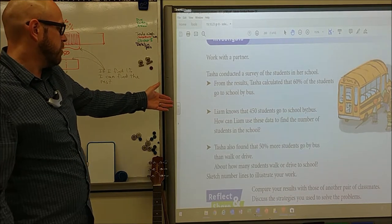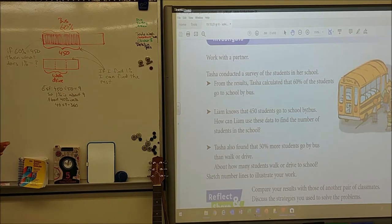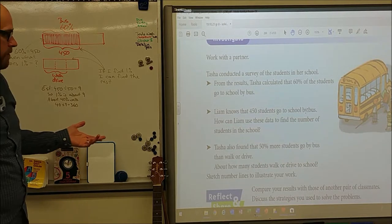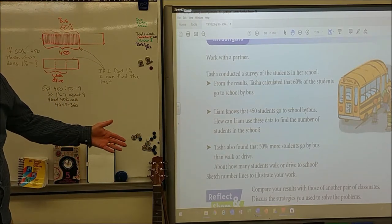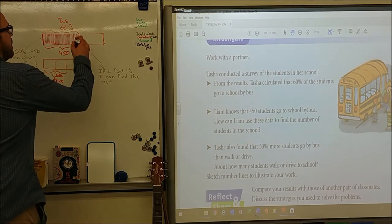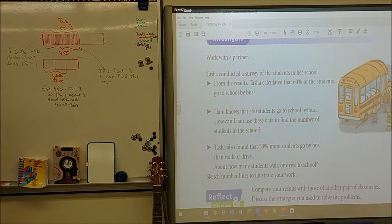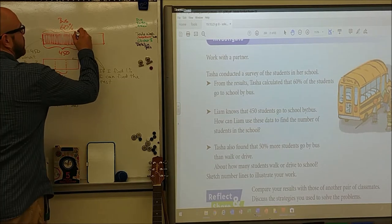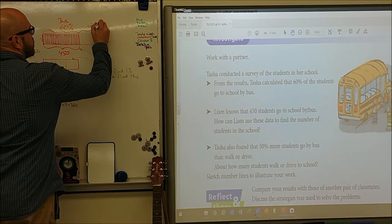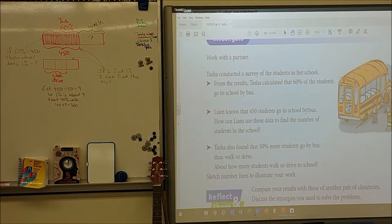Liam knows 450 go by bus. So that's 60%. How can Liam use this data to find the number of students in the school? So first we want to find out how many students are in the school. But then Tasha also found out that 50% more students go by bus. How many walk or drive to school? We want to know how many are walking as well. So there's two things we want to find out. How many kids in the school and how many kids are walking.